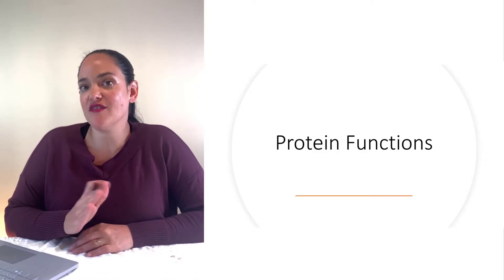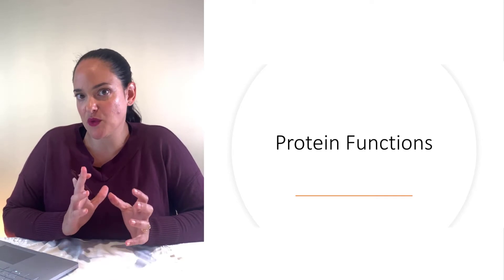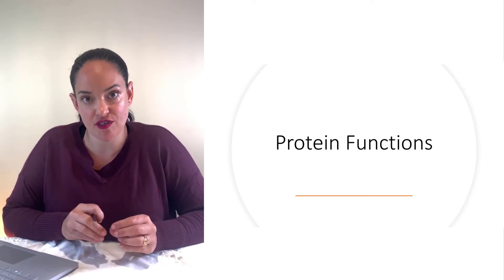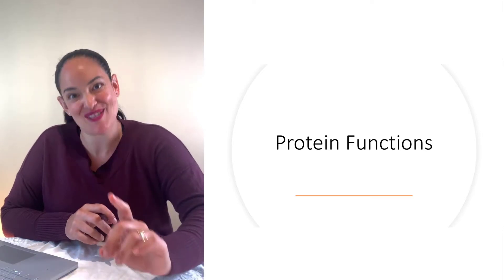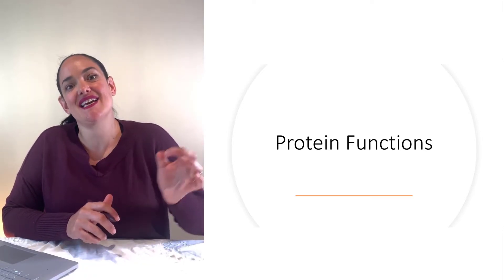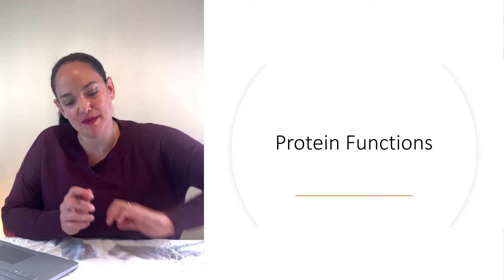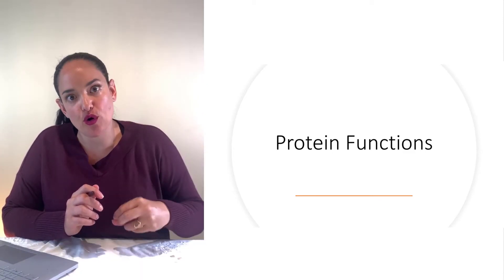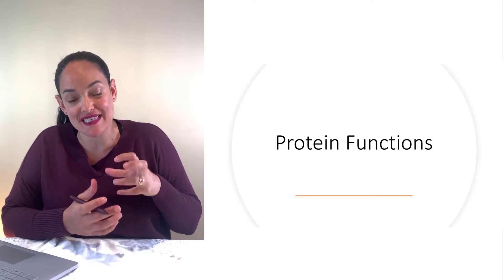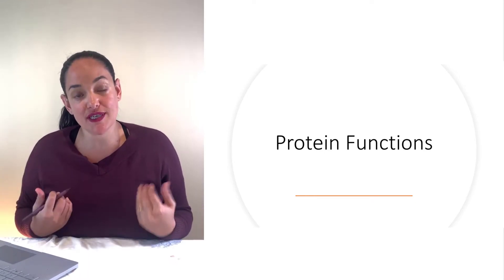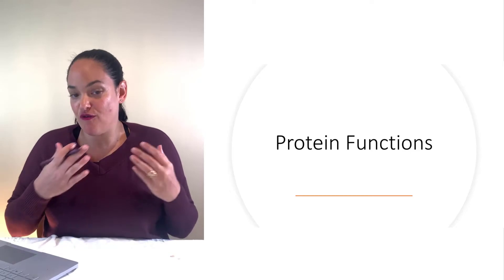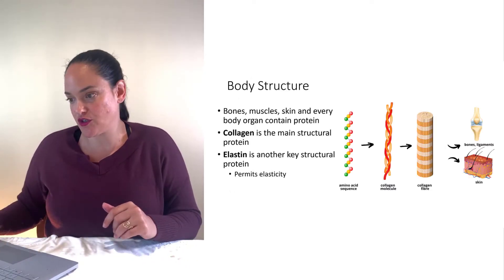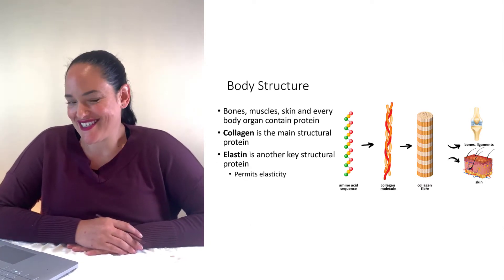We learned in chapters 5 and 6 that one of the main roles of both carbohydrates and lipids is to provide energy to the body. That is not the case with protein. I like to say that we eat protein to make protein — we eat dietary protein in order to get the amino acids necessary to build the various proteins that our body needs for both physiology and anatomy, for both function and structure.